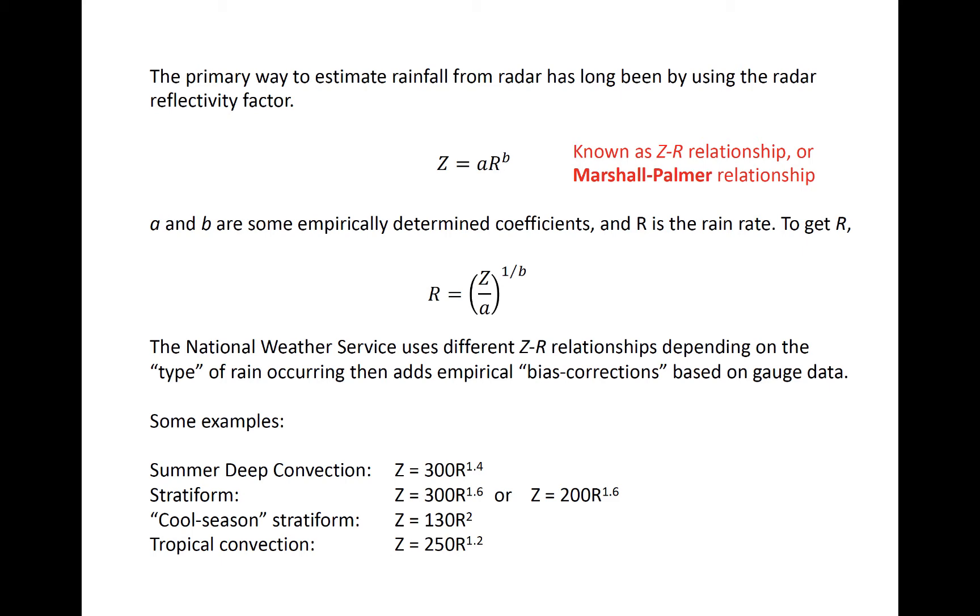However, for radars without dual-polarimetric capabilities, only Z-R relationships can be used, like these seen here and others.